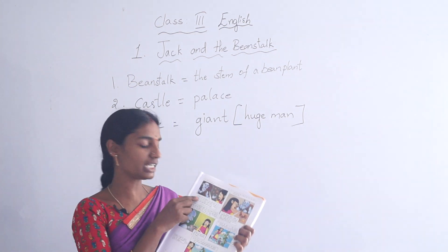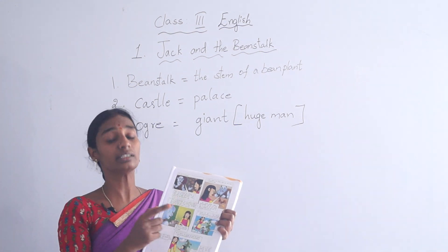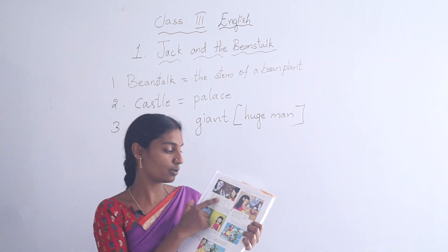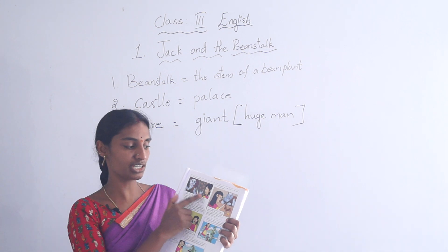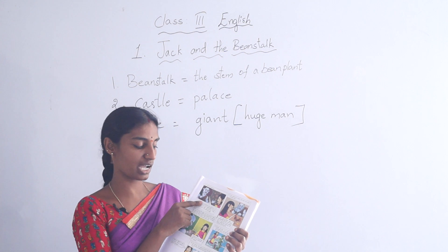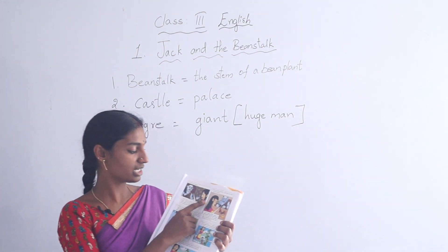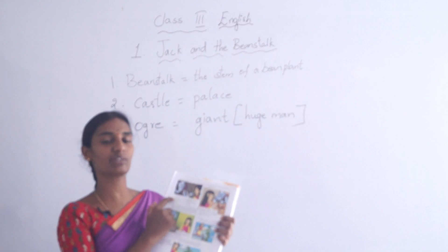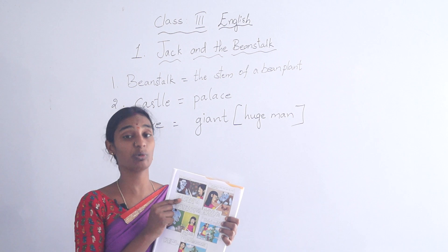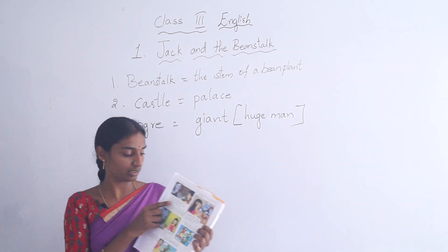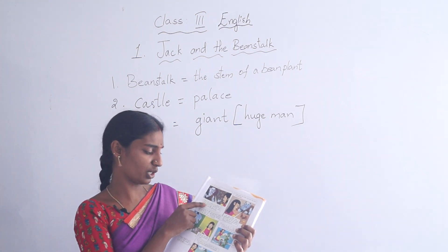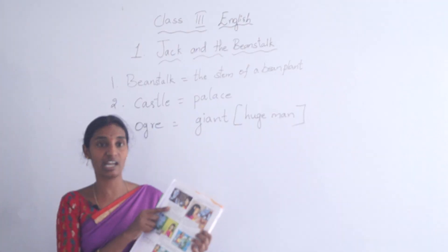Page seven. The ogress hid the boy behind the trunk. Now the ogre entered into the hall and shouted at his wife: 'I am feeling hungry, give me breakfast.' So the ogress offered breakfast to the ogre. But the ogre was very disappointed with the breakfast and said: 'The breakfast was pathetic and I am not happy with what you have offered me. I am very angered now.'